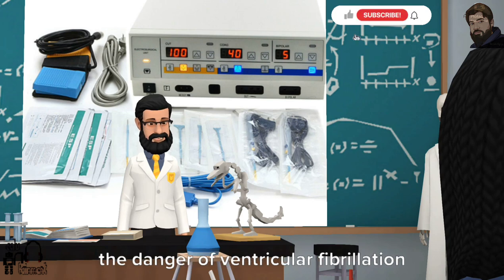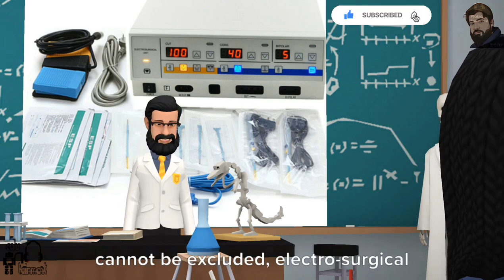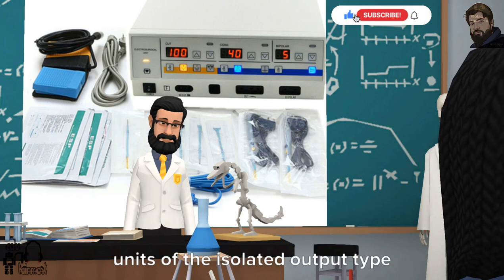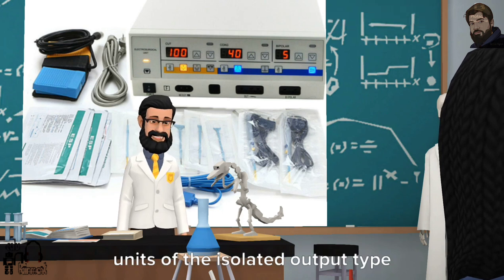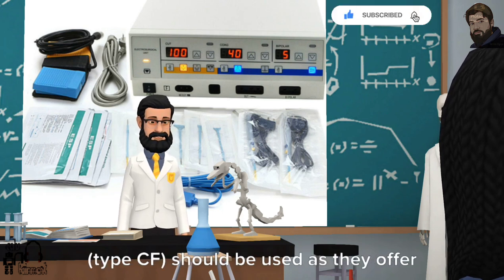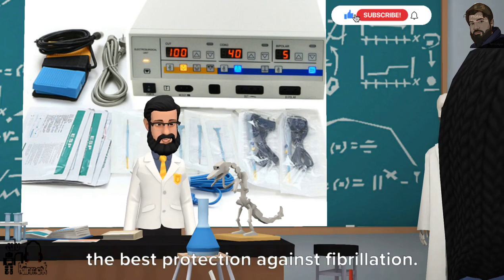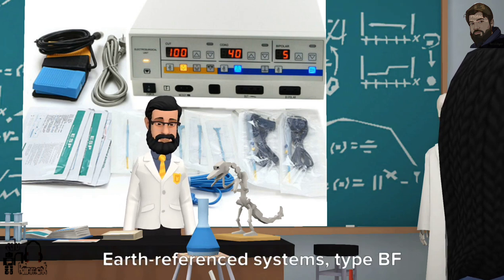For surgical applications in which the danger of ventricular fibrillation cannot be excluded, electrosurgical units of the isolated output type (type CF) should be used as they offer the best protection against fibrillation.